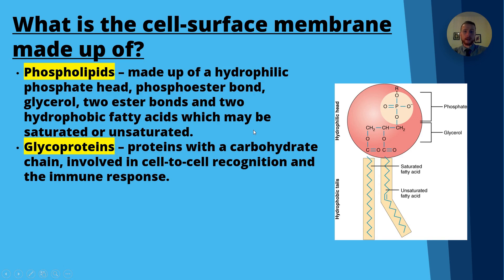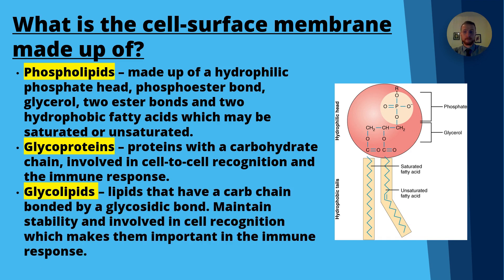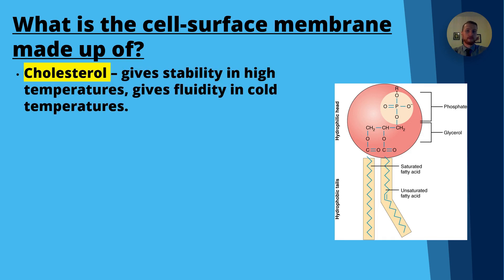Glycoproteins are proteins with a carbohydrate chain and they're involved in cell-to-cell recognition and the immune response. Glycolipids are lipids that have a carbohydrate chain bonded by a glycosidic bond — they're involved in maintaining stability and also in cell recognition, making them integral in the immune response. Cholesterol gives stability in extremes of temperature: at high temperatures it gives stability, and at really low temperatures it maintains fluidity.